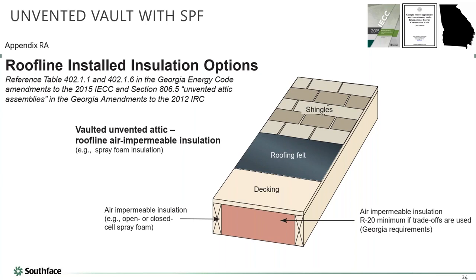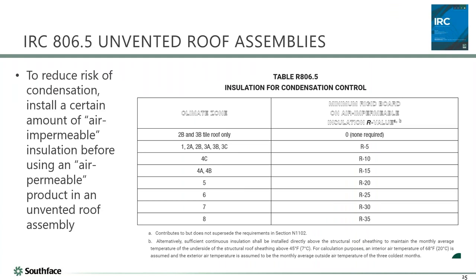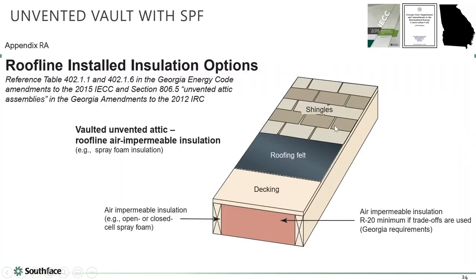The newer approach is to use spray polyurethane foam applied directly against the underside of the roof deck — the code allows this. In Georgia we have a backstop table with a minimum: you don't have to do the full R-38, but you must do at least R-20. That can be either open or closed cell foam.